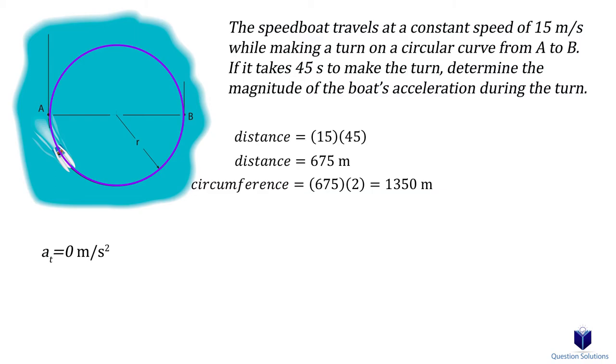We know that circumference is equal to 2 pi r. Isolating for r gives us 1350 divided by 2 pi. So the radius is 214.859 meters.